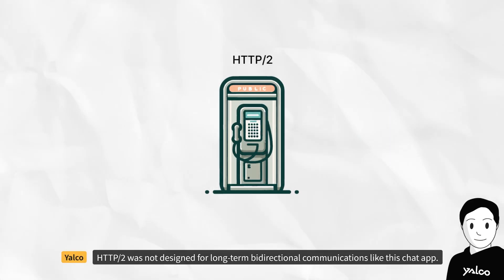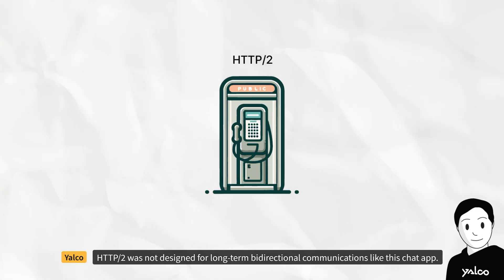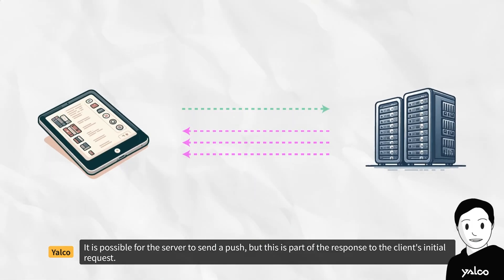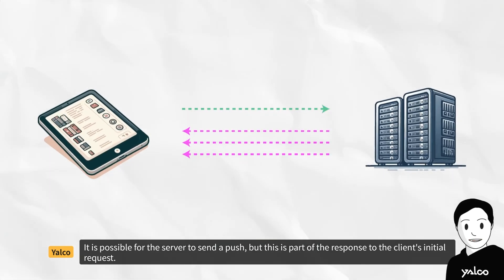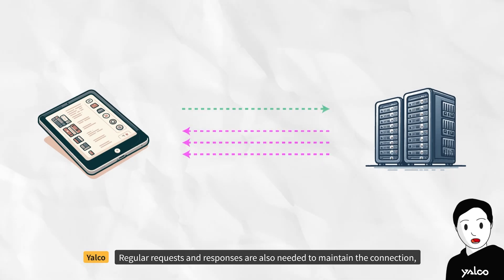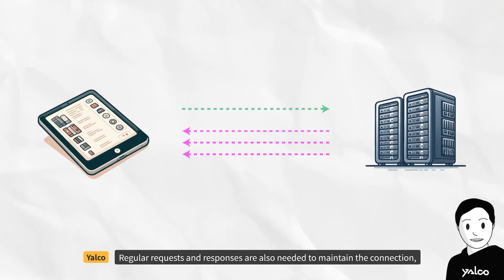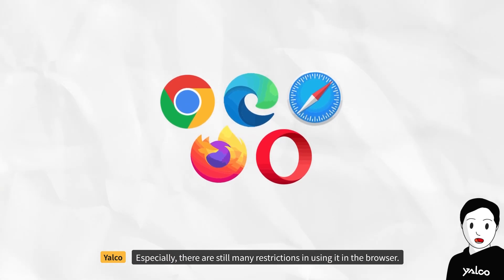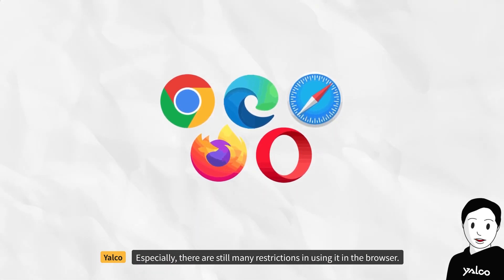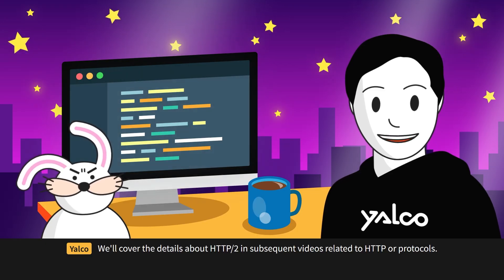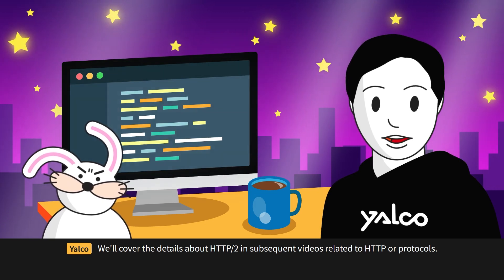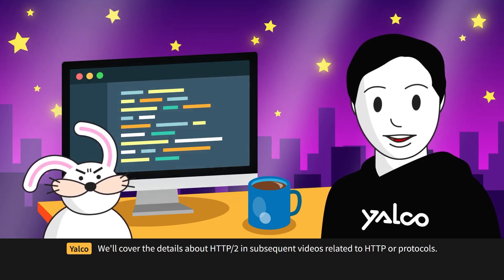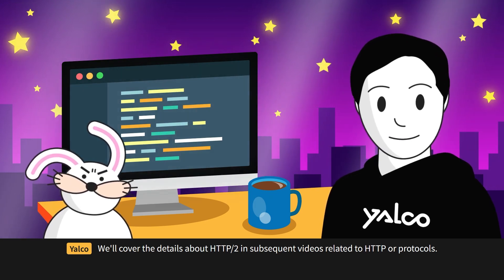HTTP 2 was not designed for long-term bidirectional communications like a chat app. It is possible for the server to send a push, but this is part of the response to the client's initial request. Regular requests and responses are also needed to maintain the connection, and especially there are still many restrictions in using it in the browser. We'll cover the details about HTTP 2 in subsequent videos.